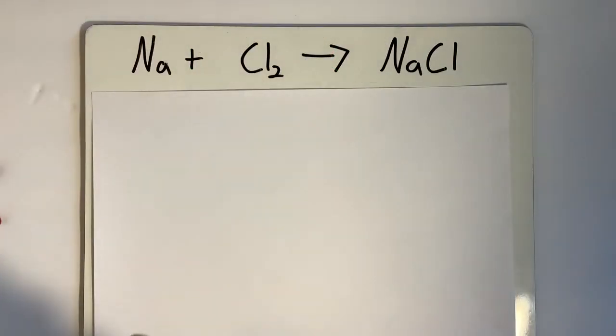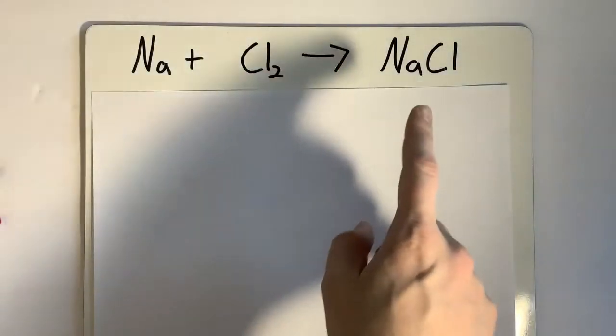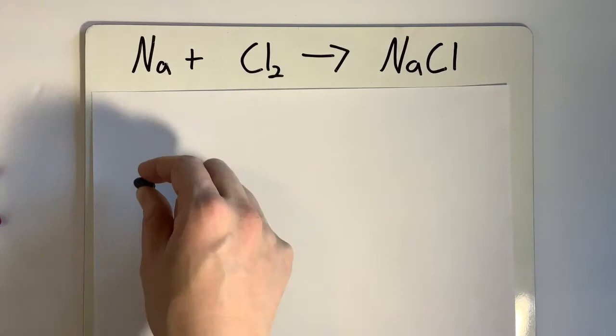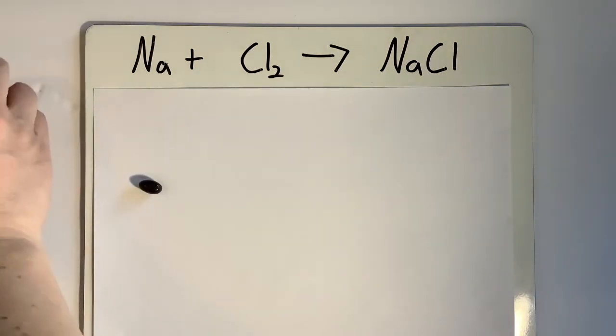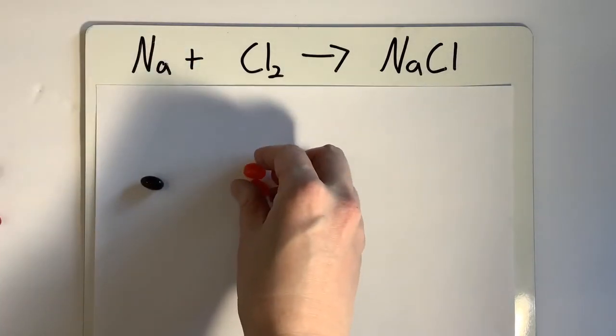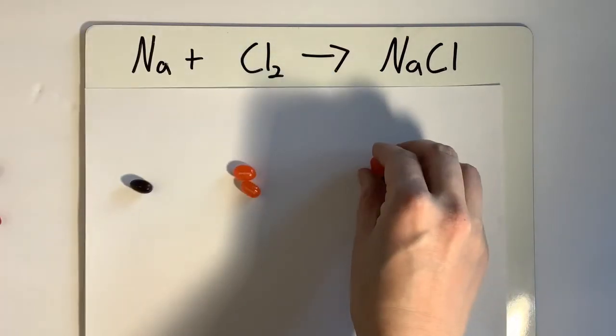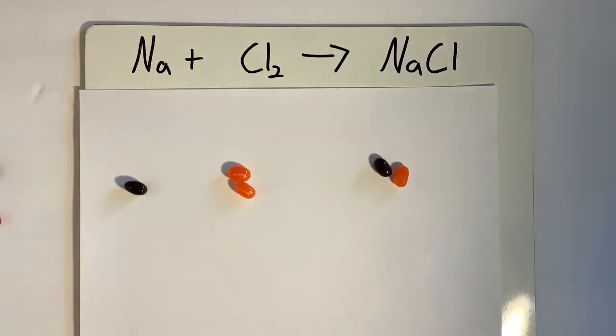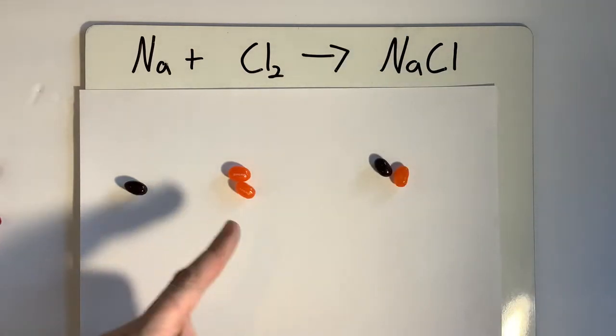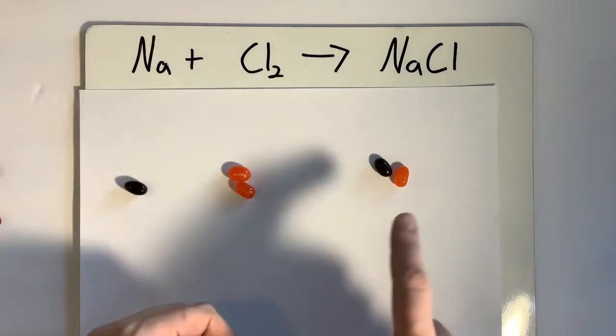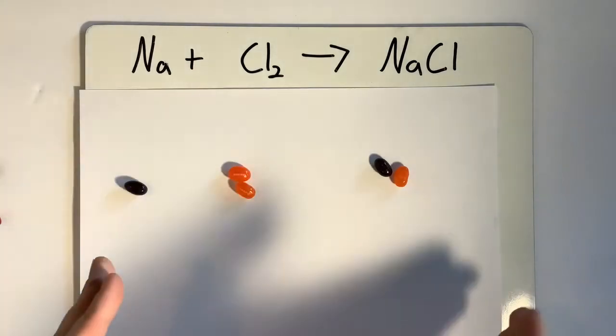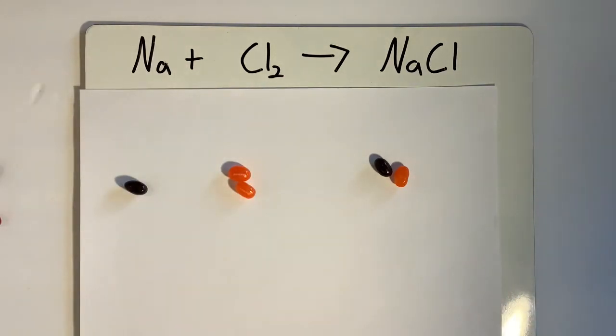Here I have another reaction. I have sodium and chlorine, making sodium chloride. Yay for salt! Now I'm going to use purple (these look black on camera, but they're actually purple) for my sodium. And then I'll use orange for my chlorine. And then I have sodium chloride, purple and orange. So purple plus two oranges makes a purple and orange. Well, obviously this isn't even. We want to have the same number of purples on each side and same number of oranges on each side.